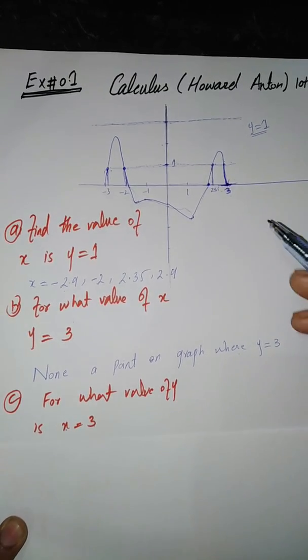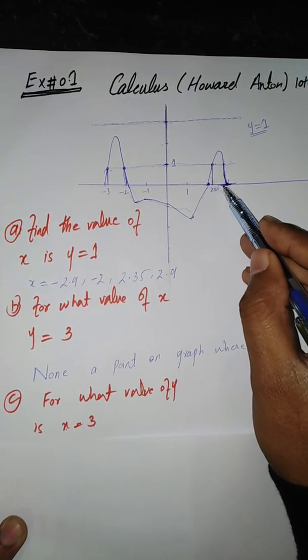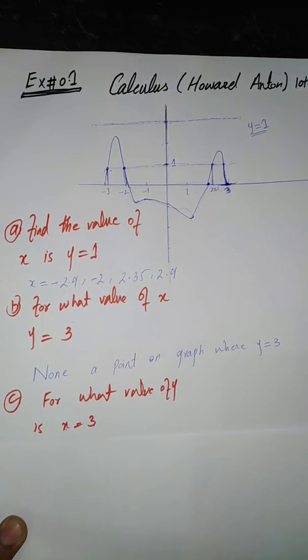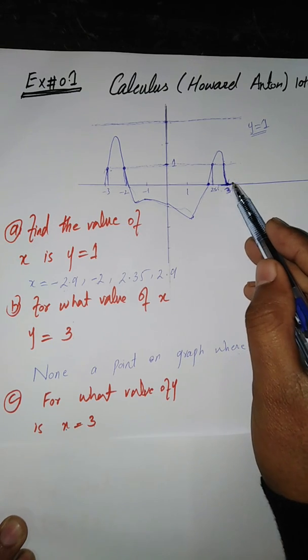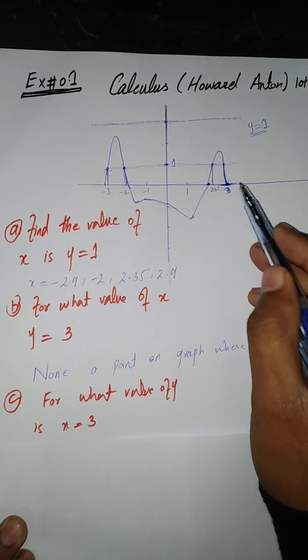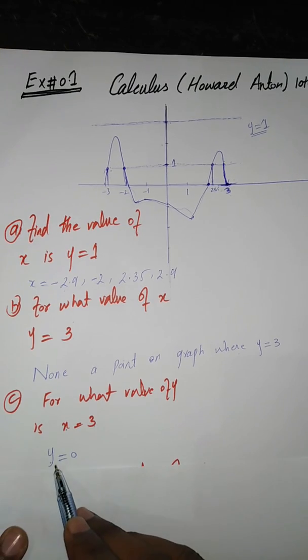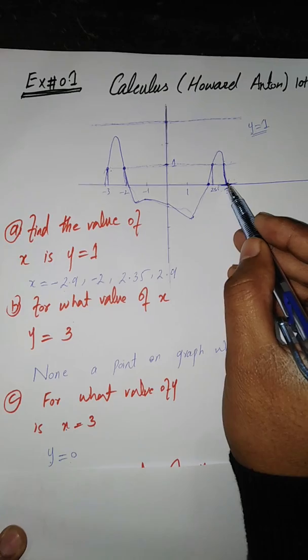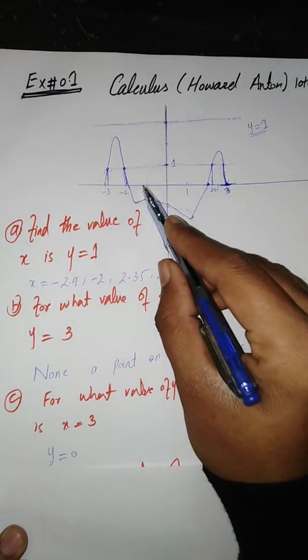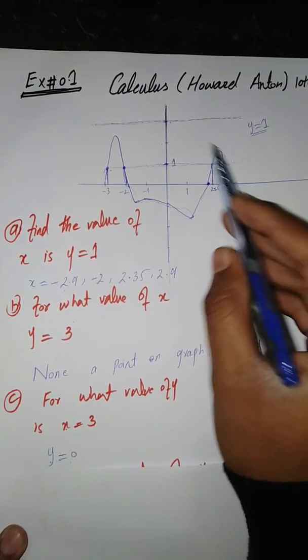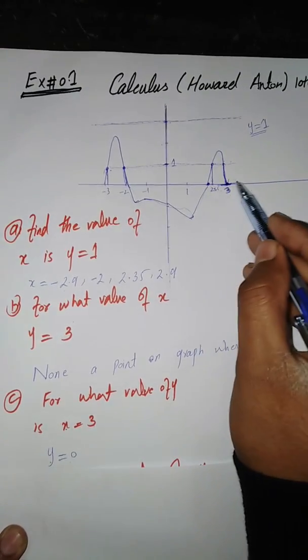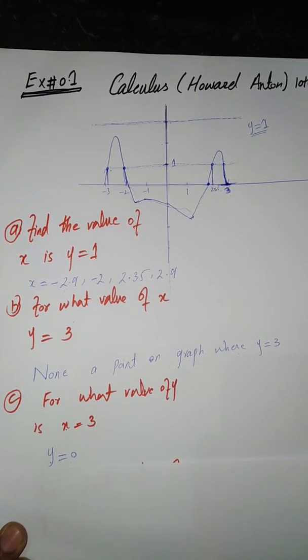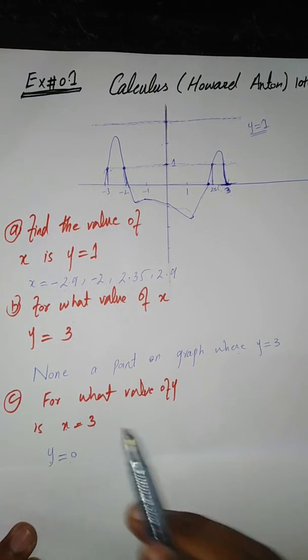The question is what value of Y at X axis. It is very simple. At the X axis, the value of Y always is 0. So Y equals 0 when X equals 3, because this point 3 is on the X axis, and on the X axis the value of Y is always 0. So that's why I write Y equals 0. This is how I solve question number one.